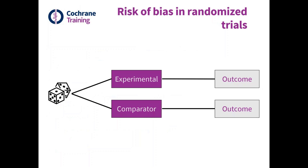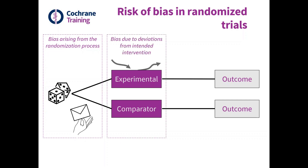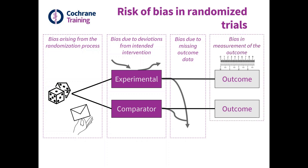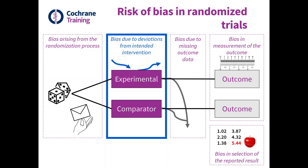This is a slide that we've been showing in all of our webinars. It's a depiction of a simple parallel group individually randomized trial, and we use it to illustrate the five domains of bias, just to provide a quick reminder and put this session into context. The first domain is bias arising from the randomization process. The second is today's topic: bias due to deviations from intended intervention. The third is missing outcome data, the fourth is measurement of the outcome, and the fifth is selection of the reported result. The session today is about this domain.